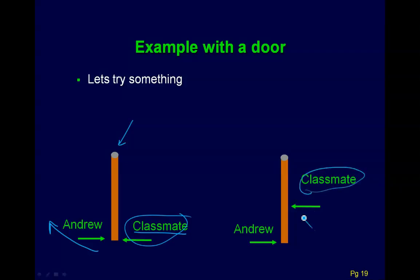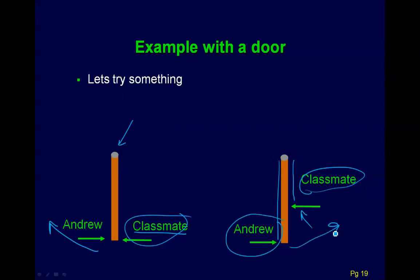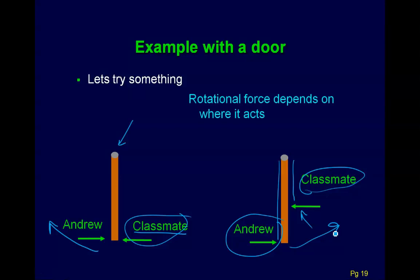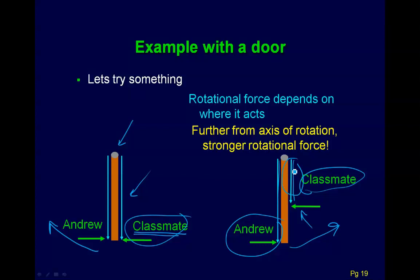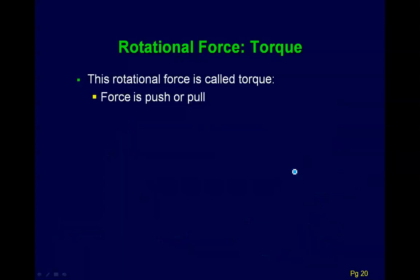The rotational force depends on where it acts, not only how strong it is. Further from the axis of rotation, the stronger your rotational force will be. This rotational force is called torque — force is a push or a pull, but torque is a twist. The general definition of torque is the cross product of the force and the radius. For the simple case where all of the force tends to rotate the object — when the force makes a right angle to the distance r — the magnitude of torque is simply the force times r. Torque has units of newton meters.